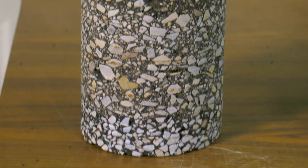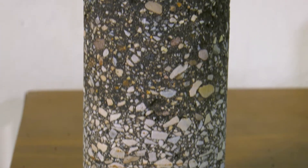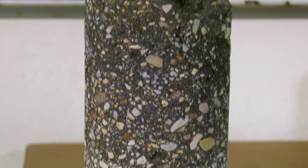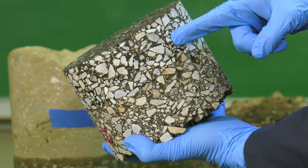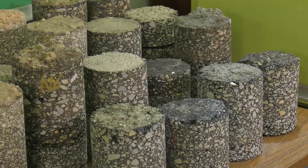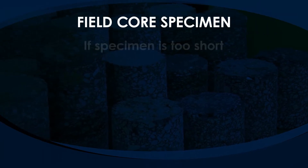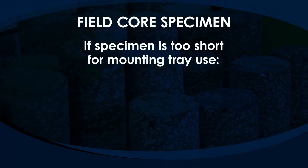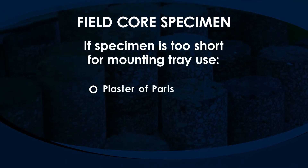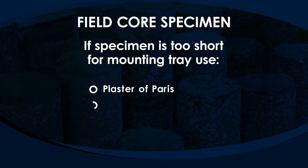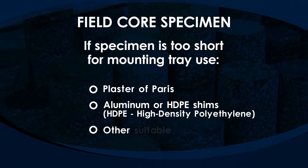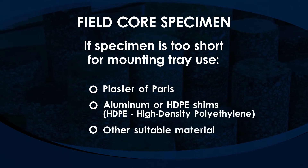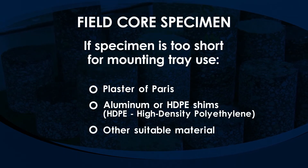Field cores are tested at the air void content and thickness at which they are obtained, or cut or trimmed to evaluate the layer of interest. If the field core specimen is too short for the mounting tray, plaster of Paris, aluminum or HDPE shims, or other suitable material can be used to fill the mounting tray.